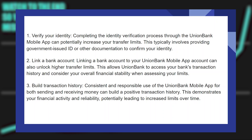This typically involves providing a government-issued ID or other documentation to confirm your identity. Then, link a bank account. Linking a bank account to your Union Bank mobile app account can also unlock higher transfer limits. This allows Union Bank to access your bank's transaction history and consider your overall financial stability when assessing your limits.